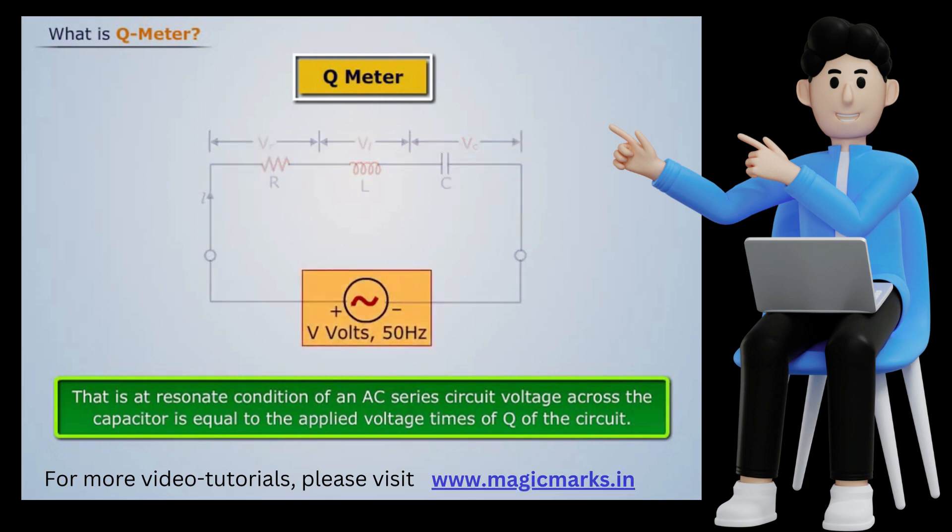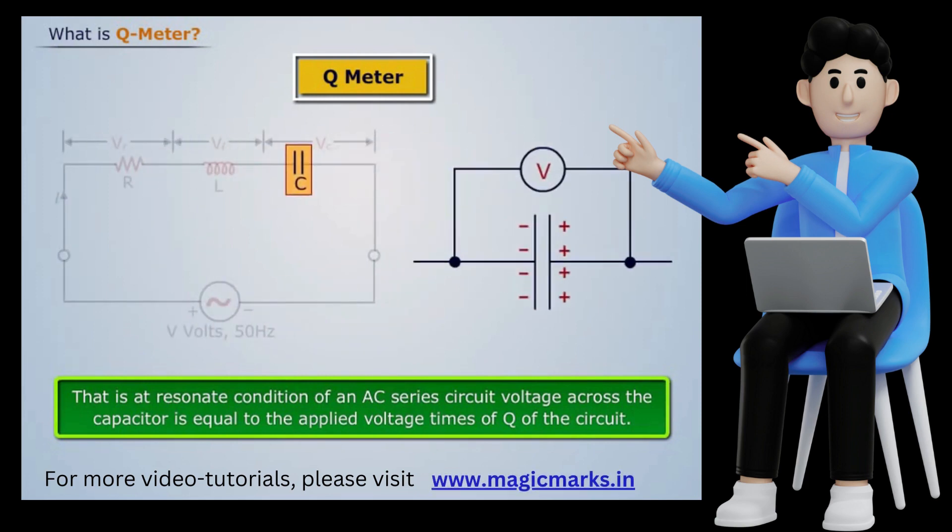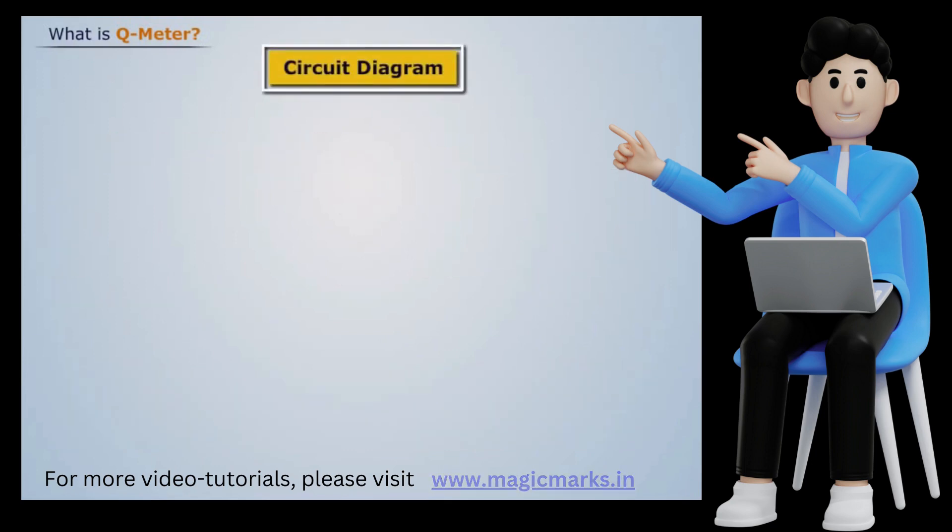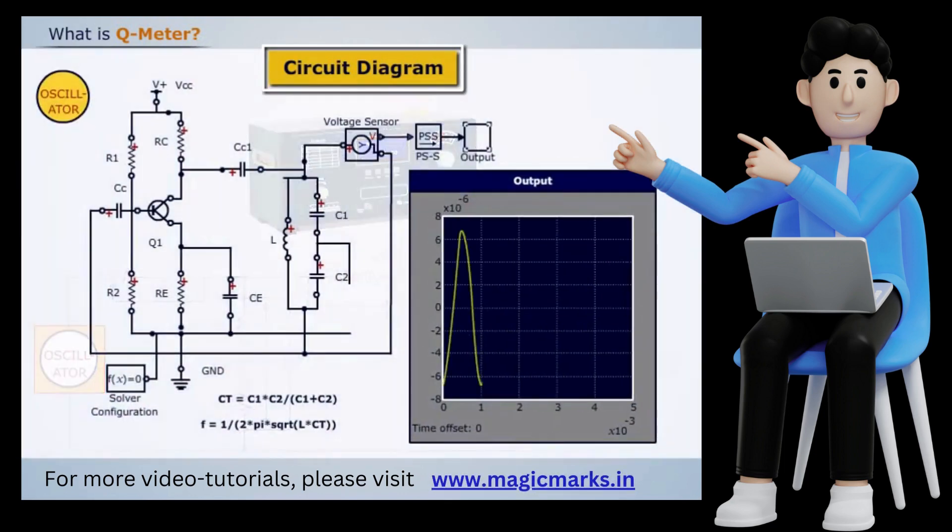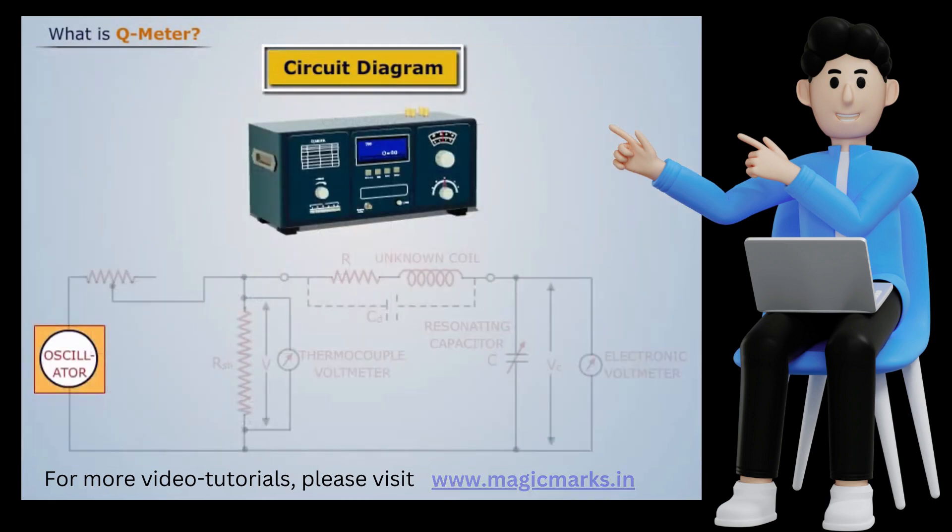Now here we will discuss the circuit diagram of a Q meter. A wide range oscillator with frequency range from 50 kilohertz to 50 megahertz is used as a power supply to the circuit. The output of the oscillator is shorted by a low value resistance RSH, usually of the order of 0.02 ohm.